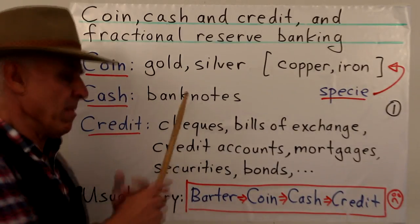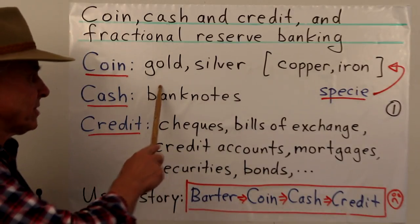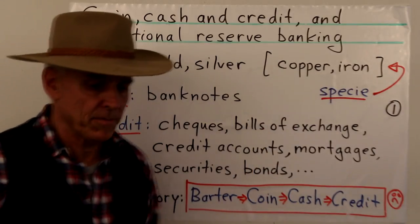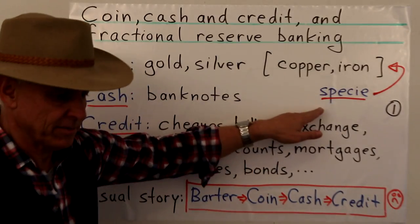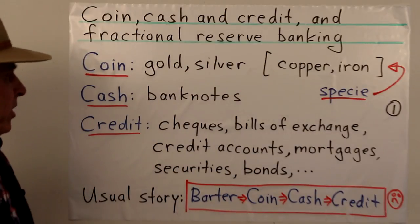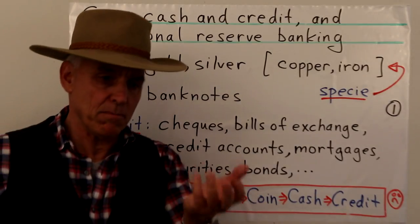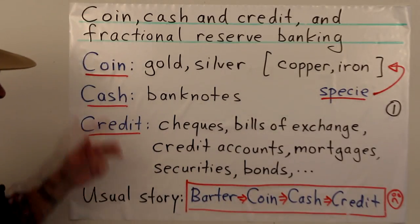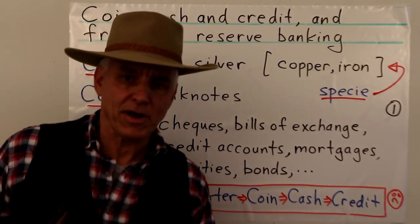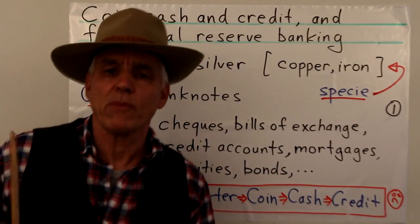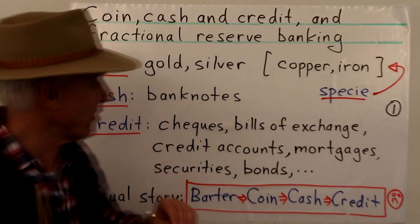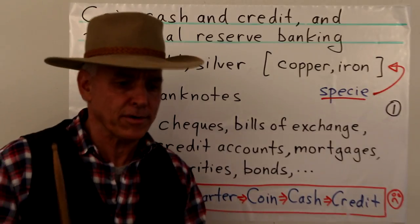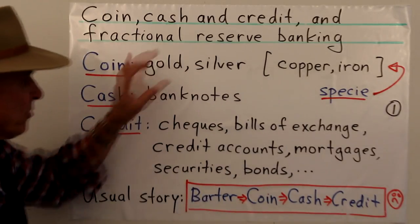Coin for us means metal — gold, silver prominently — but in history, copper and iron also played a role. Another name for coin is specie. These don't actually have to be coins; they just have to be metals that we can weigh, feel, and put in our pocket. Back in the day when I started out, this was the primary source of money. This is what money really was, and the other forms were variants or somehow related to this core aspect of money.